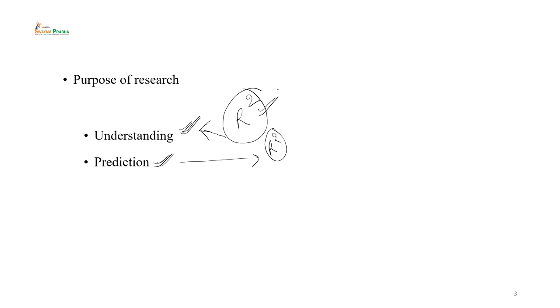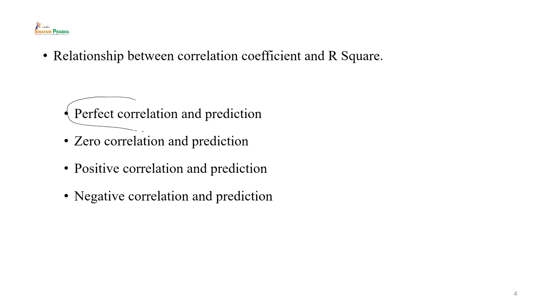जो analysis हमें यहाँ help करता है वह है r square, क्योंकि इसी के माध्यम से हम लोग future के predictions, या एक variable से दूसरे variable के predictions कर सकते हैं। regression में correlation के साथ direct संबंध है। correlation coefficient या तो perfectly correlated हो, zero correlation हो, positive correlation हो, या negative correlation हो — इनका हमारी prediction से क्या संबंध है, यह हम देखेंगे।